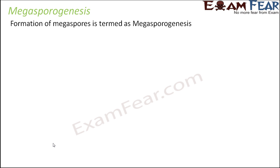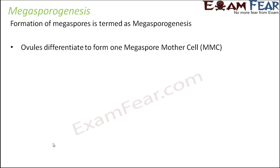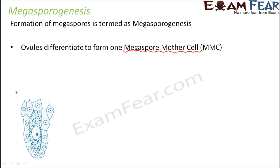The female ones are called megaspores. Now what exactly happens in this process? The ovules differentiate to form one megaspore mother cell. Mother cell means this cell is going to produce the megaspore. The ovules will just differentiate — there will be no cell division — to form the megaspore mother cell. Here you can see the megaspore mother cell surrounded by the nucellus cells, inside which is the embryo cell.